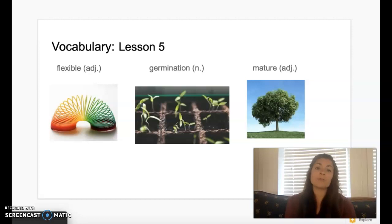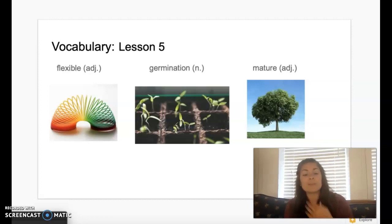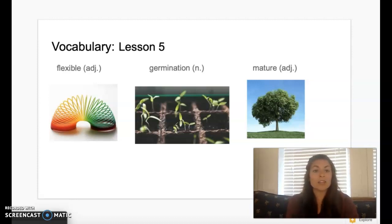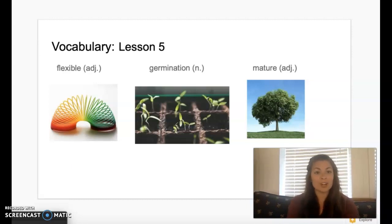Our first vocabulary word for today's story is the word flexible. Repeat after me, flexible. Flexible means able to bend or move easily. Our second vocabulary word is the word germination. Say germination. Germination is the process in which a seed begins to grow into a plant. Our last vocabulary word for today's story is the word mature. Say mature. Mature means fully grown.